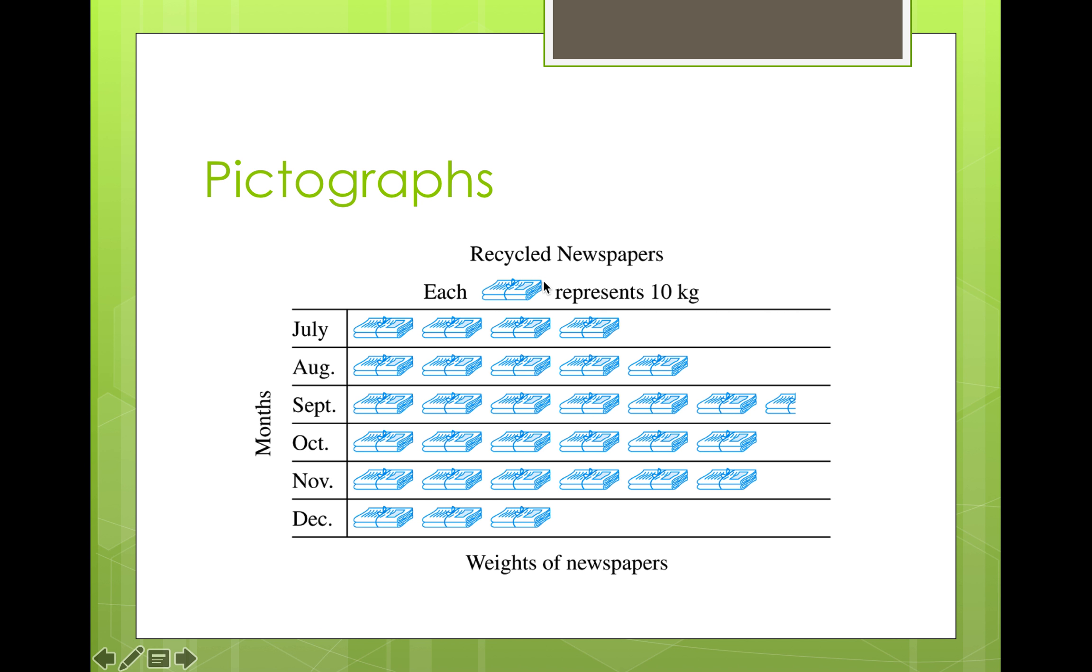So in there, each picture represents something. So we have to be able to skip count, so count by fives or tens or twos. So this is a skill that we see come up a lot in kindergarten. So in July, we could say there are 10, 20, 30, 40 kilograms of newspapers recycled. With pictographs, you can use half, so if you look down here in September, that's half of a newspaper. So that would be five, so 10, 20, 30, 40, 50, 60, 65 on here.